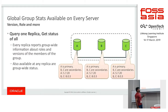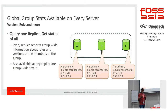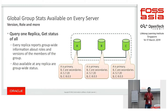In group replication, if we are using single primary or multi-primary mode, the roles of members can be primary or secondary, and they can be on different versions. Now I have the status of the complete group showing information like who is primary. In this example A is primary and B and C are secondaries. A is on version 5.7.20 whereas B and C are on version 8.0.3. This information is consistent across the group — if I query a particular server I get the same information as across the group.